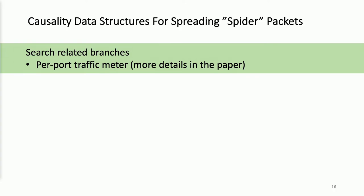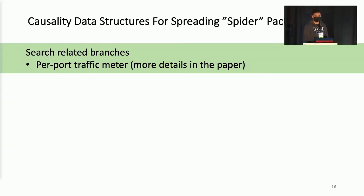To search the related branches who send excessive data, we use what we call per-port traffic meter. You can find more details about this data structure in the paper.